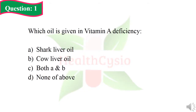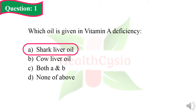Question 1: Which oil is given in vitamin A deficiency? Option A: shark liver oil. Option B: cow liver oil. Option C: both A and B. Option D: none of the above. The right answer is Option A, shark liver oil.